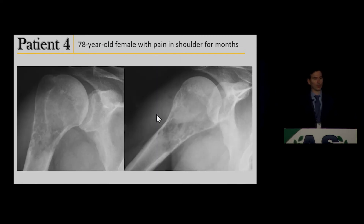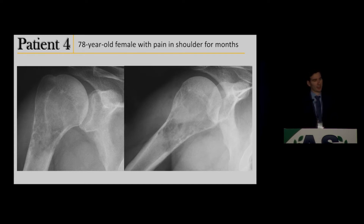Case 4: a 78-year-old woman who had progressive pain in her shoulder for several months. It eventually became debilitating; she was self-medicating at home and then came in and got this shoulder radiographic series.